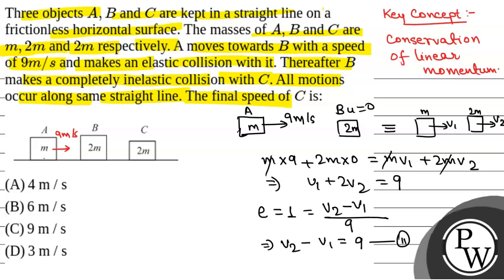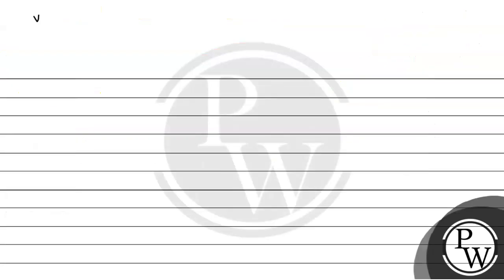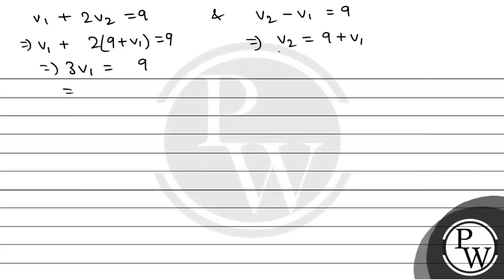Solving these equations: V1 plus 2V2 equals 9, and V2 minus V1 equals 9. From this we get 3V1 equals 9, so V1 equals 3 meter per second.